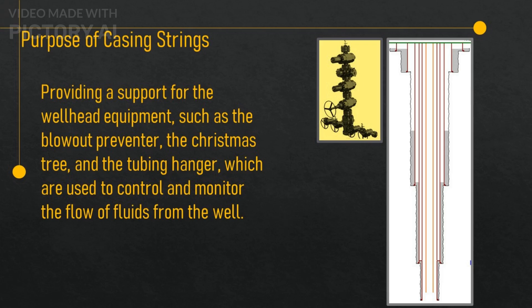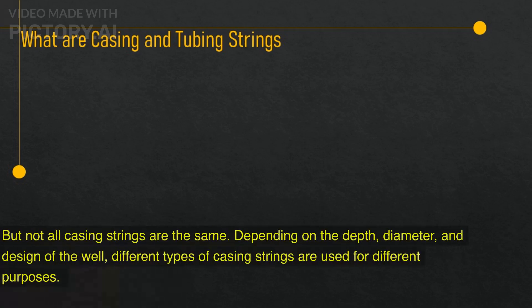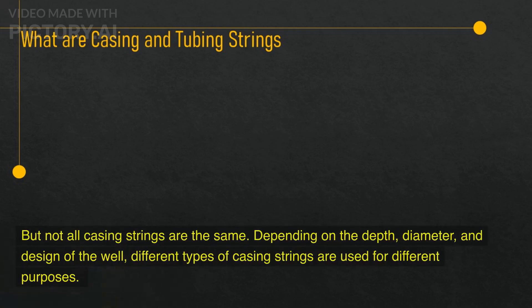It provides support for the wellhead equipment, such as the blowout preventer, the Christmas tree, and the tubing hanger, which are used to control and monitor the flow of fluids from the well. The casing string is a vital part of any oil well, and without it, the well would not be able to function properly or safely. Depending on the depth, diameter, and design of the well, different types of casing strings are used for different purposes.